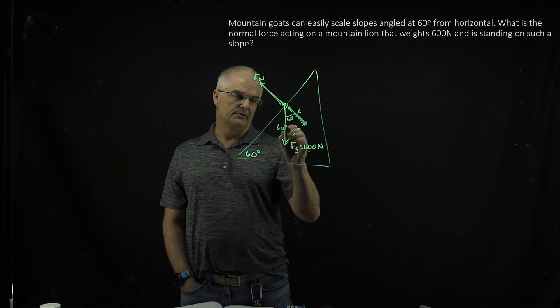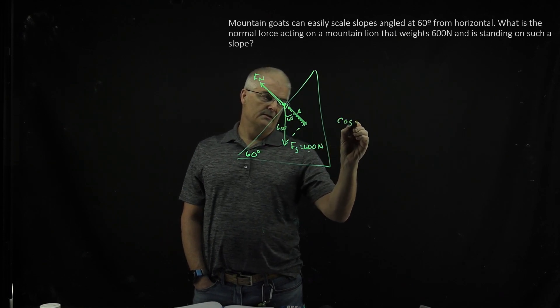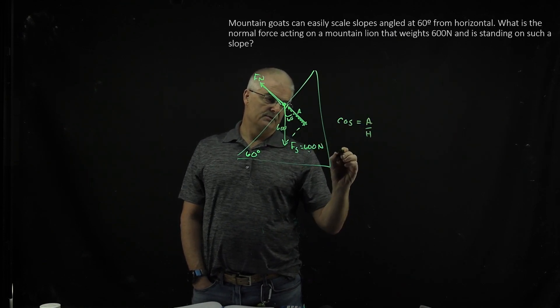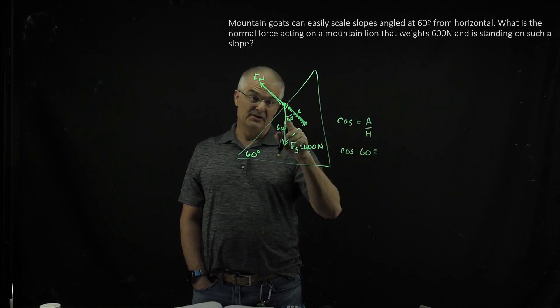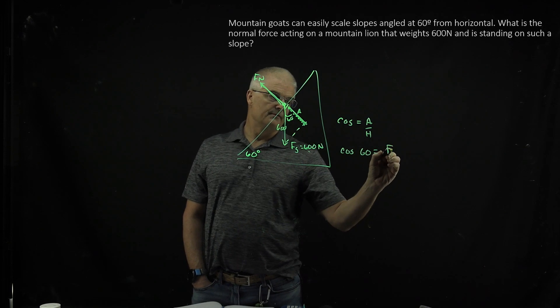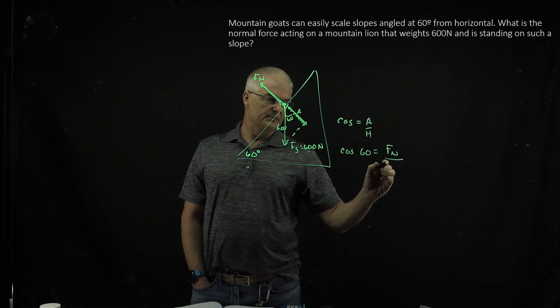So if you remember, cosine equals adjacent over hypotenuse. So I can say cosine of 60 is equal to, and the adjacent is the normal force. So I can say force normal over the hypotenuse, which was 600.